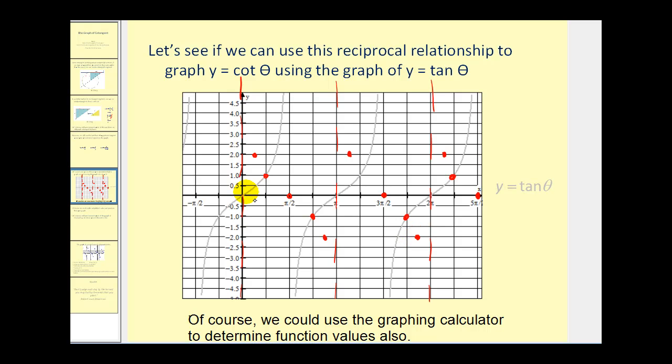Lastly, where tangent is equal to one-fourth, the reciprocal of one-fourth would be four. And here, where we'll approximate the value of negative one-fourth, the reciprocal would be negative four. We can see we have a nice graph of y equals cotangent theta.